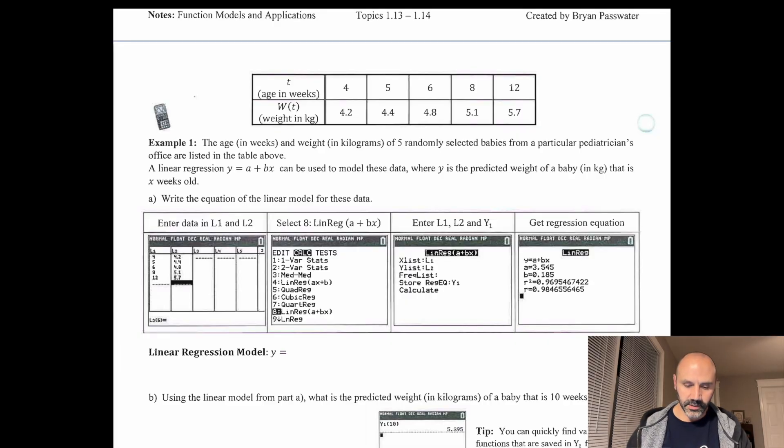So example one, the age in weeks and weight in kilograms of five randomly selected babies from a particular pediatrician's office are listed in the table above. And then they tell you a linear regression can be used to model these data. Data, by the way, is plural. The singular of data is datum. It's a Latin word. So anyway, these data, where y is the predicted weight of the baby that is x weeks old. Again, functions, input, output. So the input is the age and the output is going to be the mass in kilograms of the baby. They say weight in kilograms. Again, physics teacher, kilograms is mass, but whatever.